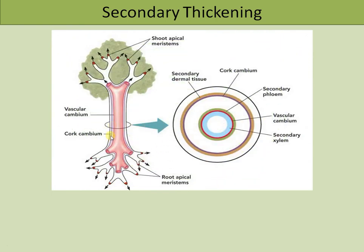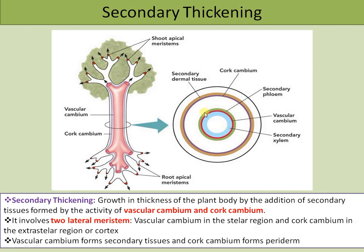Secondary thickening is simply growth in thickness of the plant by the activity of two laterally placed meristems: the vascular cambium and the cork cambium. Plants are capable of indefinite growth due to the presence of meristems. Shoot apical meristem and root apical meristem are involved in growth in length, whereas growth in thickness is carried out by vascular cambium and cork cambium. Vascular cambium is present at the central region inside the stele, whereas cork cambium is present at the cortical region.